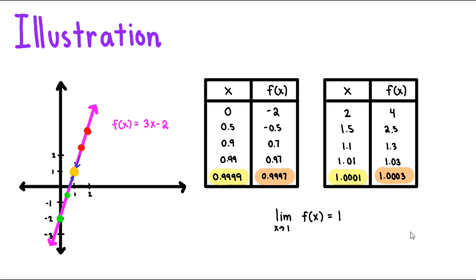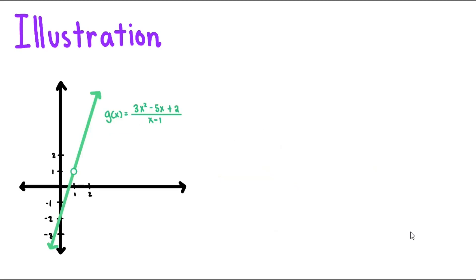Let's have another illustration. Consider this function g of x given by 3x squared minus 5x plus 2 all over x minus 1. Now, take note that g of x is undefined at x equals 1, since plugging in 1, we will have 1 minus 1 in the denominator, which equals 0.